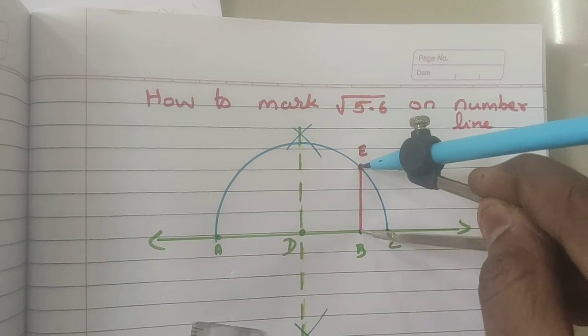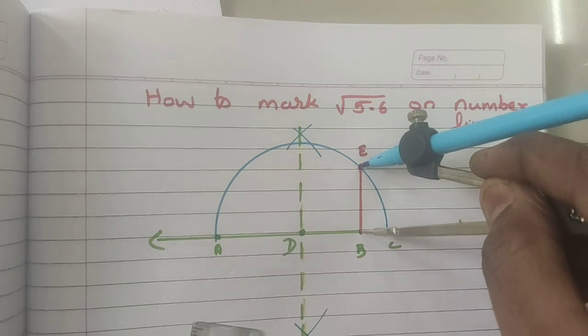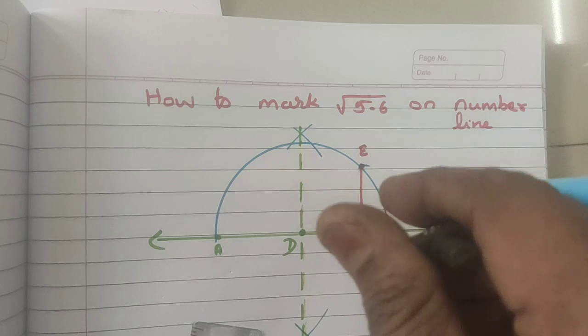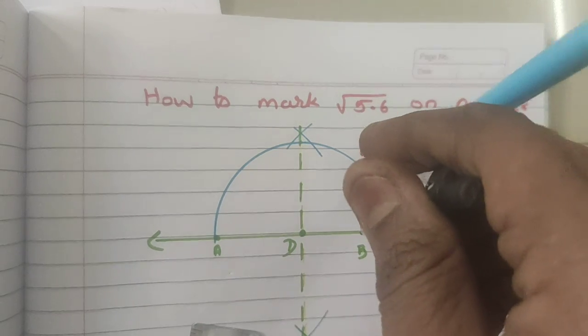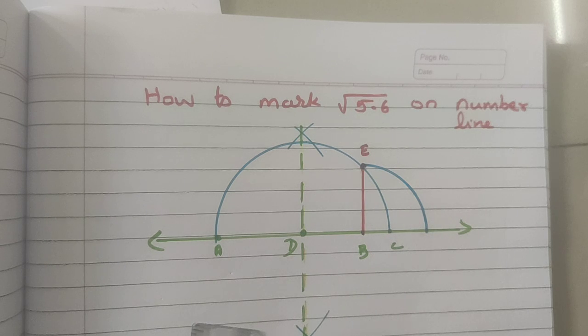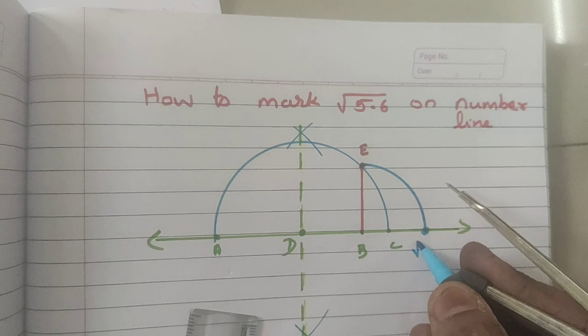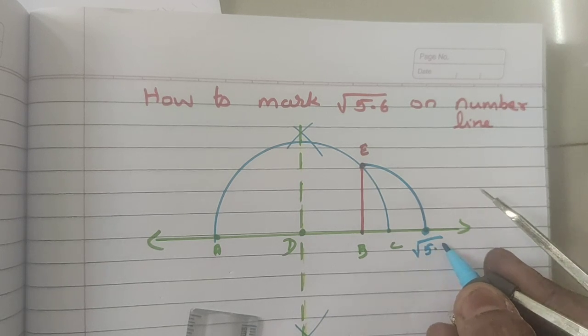Just take your compass, adjust your compass so that exactly this measurement you should measure. Draw an arc till the number line. Is it clear? Now, this point is nothing but root 5.6.